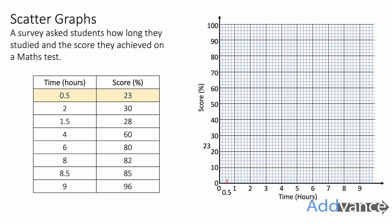The first one is 0.5 and 23, so it goes 0.5 hours across and 23 up, and we put a cross there. Next one is 2, 30. Next one is 1.5, 28. 4, 60. 6, 80. 8, 82. 8.5 and 85. 9 and 96.